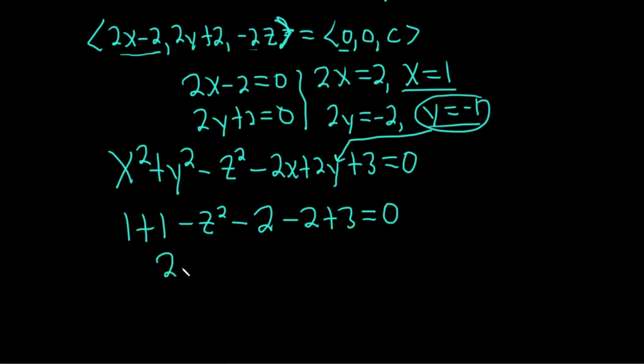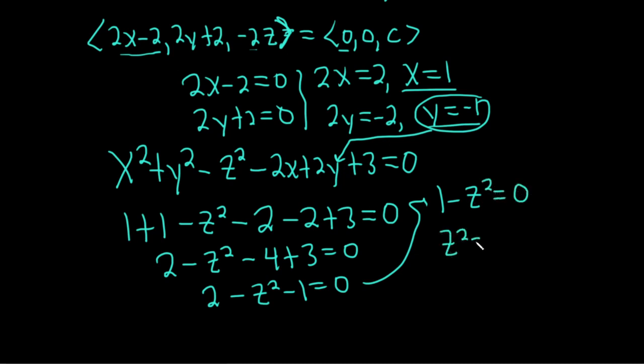So here we have 2 minus z squared minus 4 plus 3. Okay, so far so good. This is 2 and equals 0. 2 minus z squared minus 1 equals 0. That gives us 1 minus z squared equals 0. So z squared is 1. Taking the square root gives us a plus or minus, so we get z equals plus or minus 1.